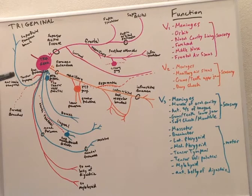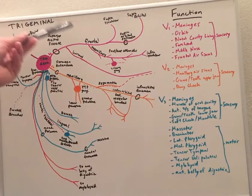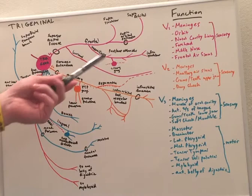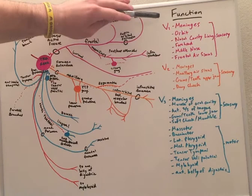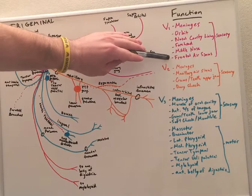So here we see the trigeminal ganglion and we have V1, V2, and V3. V1, or ophthalmic branch here in pink, its functions are to provide sensory input to the meninges, the orbit, nasal cavity lining, forehead, middle nose, and the frontal air sinus.